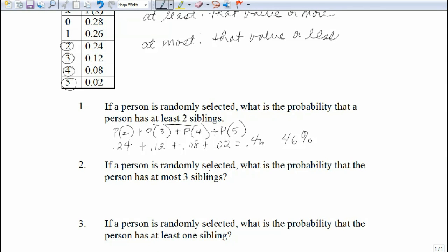Our next one is if a person is randomly selected, what is the probability that the person has at most three? At most means that value or less. So let's go ahead and erase what we've circled. So we could have three, or we could have two, or we could have one, or we could have zero.